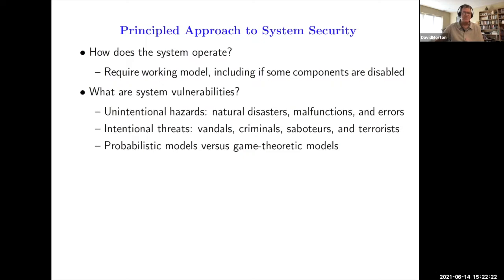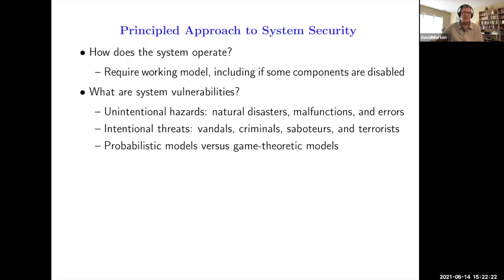And then we need to model system vulnerabilities. This is something we do pervasively in our field in terms of modeling unintentional hazards, whether they're natural disasters, malfunctions, or errors, or intentional threats like vandals, criminals, terrorists. We usually build probabilistic models for the former and game theoretic models for the latter.